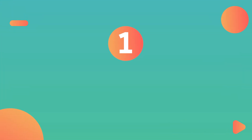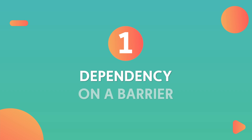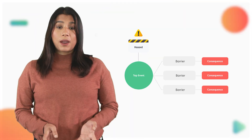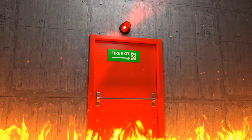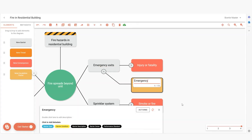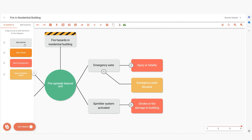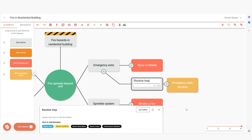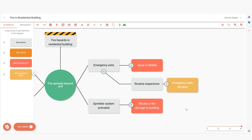Number 1: Dependency on a barrier. A degradation factor relies on a barrier. For instance, blocked emergency exits can't be a threat. Instead, the emergency exit is the barrier, and a degradation factor compromising it could be 'equipment blocking emergency exit.' In contrast, a threat is independent — it should be evident to the reader how a threat directly leads to the top event.